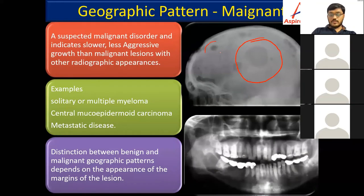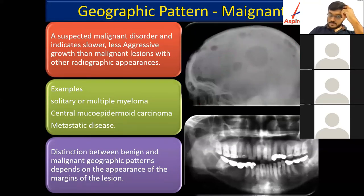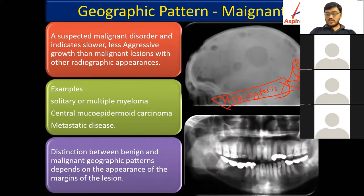The punched-out lytic appearance of the skull is seen in multiple myeloma. Specifically we are also talking about thalassemia and Langerhans cell histiocytosis — including eosinophilic granuloma — both of which can cause punched-out lesions. These are all examples of the geographic pattern. Moth-eaten appearance in osteomyelitis consists of several small areas of lysis indicating a more aggressive and rapid process than geographic pattern.